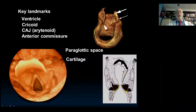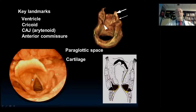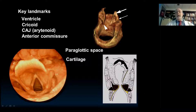Here is the epiglottis, here is the base of the tongue, and here are the aryepiglottic folds going around — that's the entrance into the larynx. The piriform sinuses are out to the side. Here you can see the trachea and the true cord going front to back in the axial plane. The ventricle is the little crease above the true cord; it separates the true cord from the false cord. Everything from the ventricle up to the epiglottis is supraglottic. The true cord is the glottis, and from the ventricle down is the subglottis.